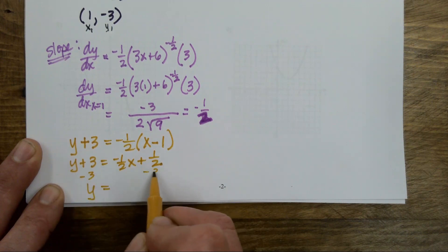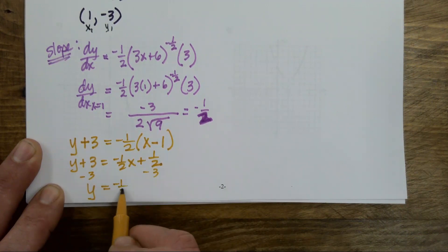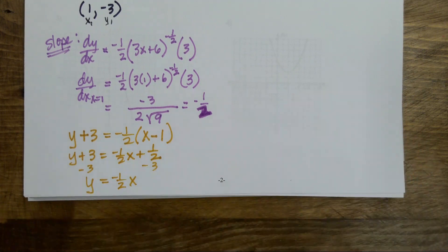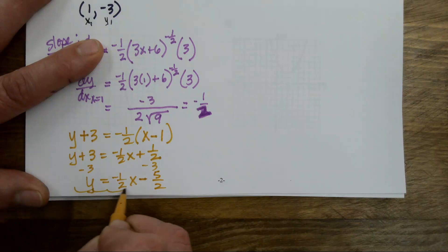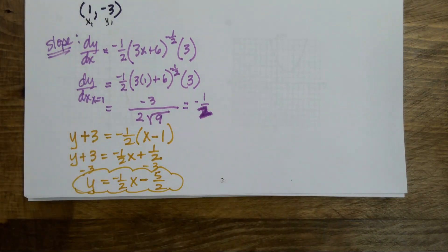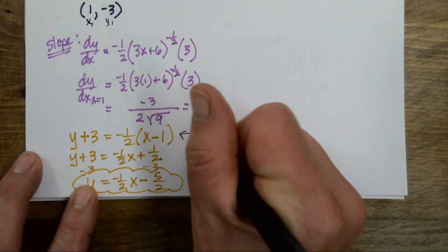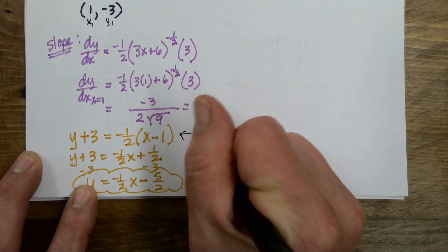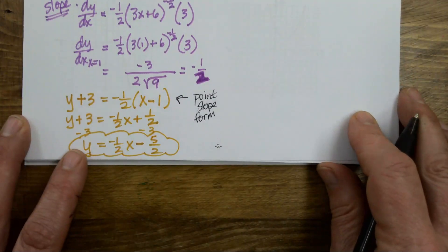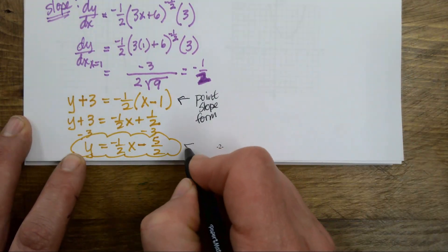This is point-slope form; I want slope-intercept form, so I just have to move stuff around until I get it in the right form. That's y plus 3 equals negative one-half x plus one-half. Then minus 3 on both sides — I just have to figure out what one-half minus 3 is. I think it's negative five-halves, and that should be my final answer.